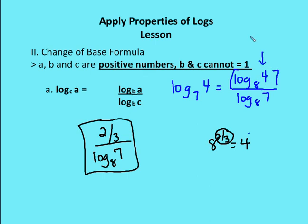If I were to rewrite this log function in exponential form, I would say 8 to the two-thirds is equal to 4. This value here in brackets is equal to two-thirds. I can't do anything with log base 8 of 7, unless I use a change of base formula to find out an answer.